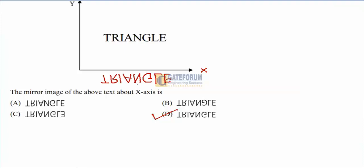Looking more carefully, N is different in that option, so it's not right. Checking the others: in one option G is different, in another E is different. The correct one is the option where everything matches perfectly.